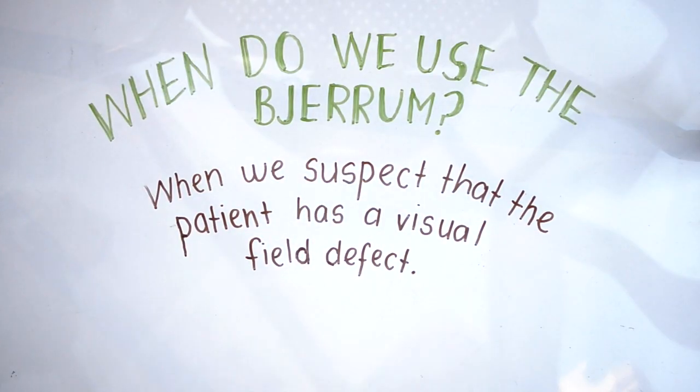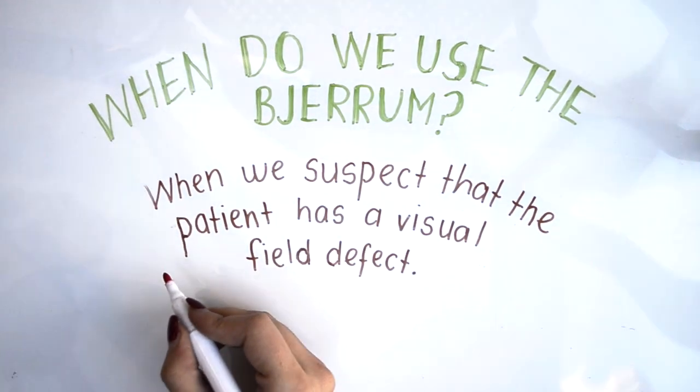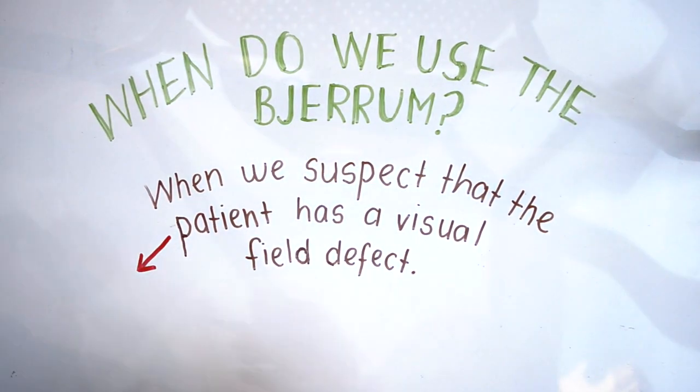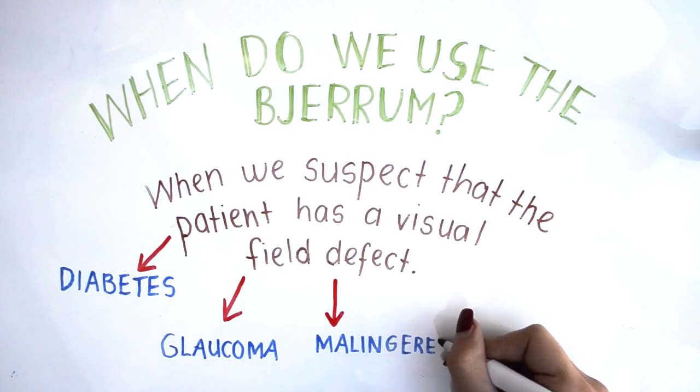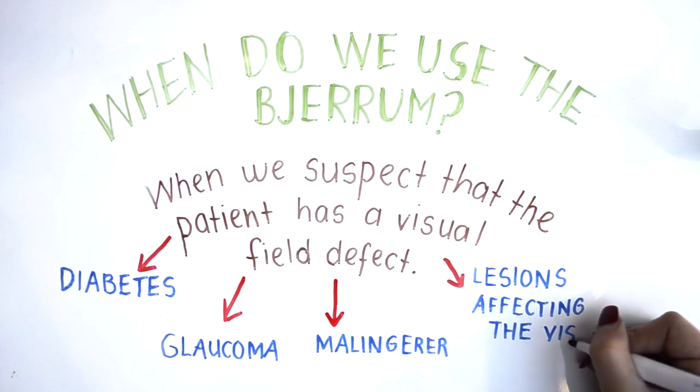The Bjerrum is normally utilized when we suspect that the patient has a visual field defect. It may be performed in diabetics, glaucoma patients, malingerers, and patients who have lesions affecting the visual pathway.